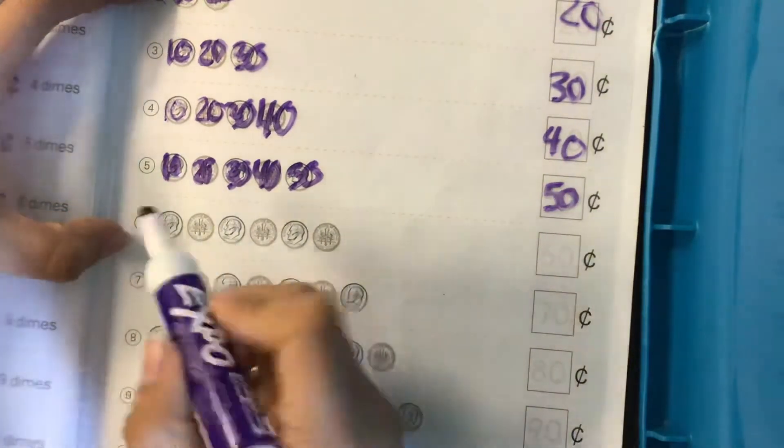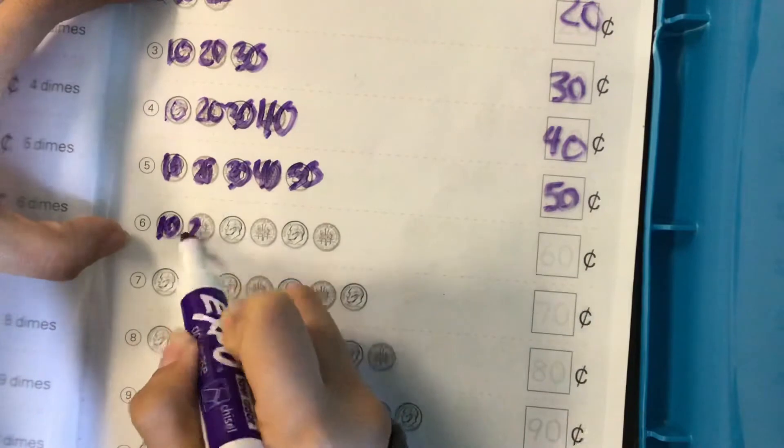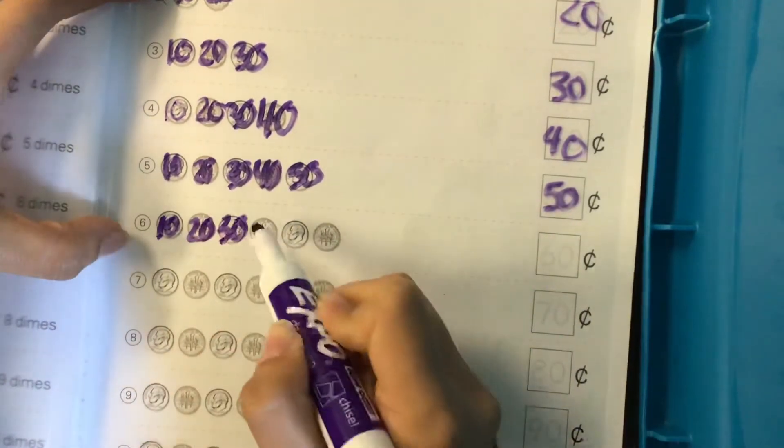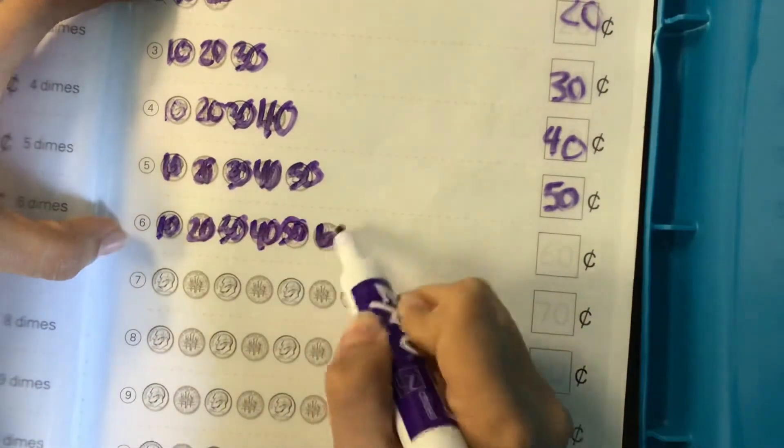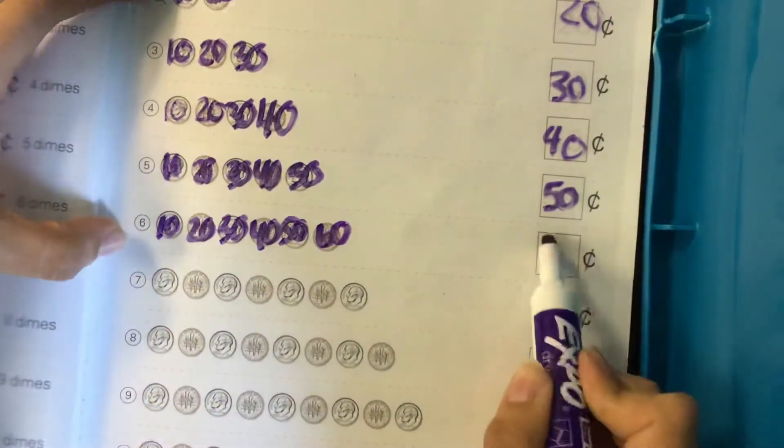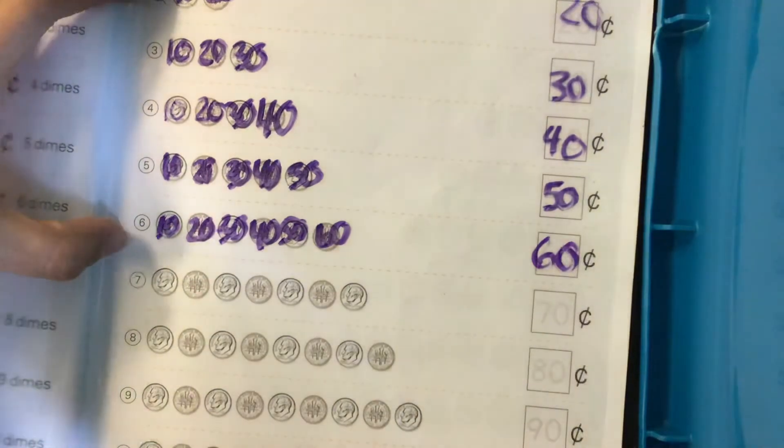Ten, twenty, thirty, forty, fifty, sixty. There are sixty cents in row six.